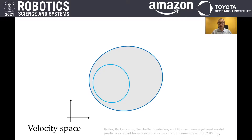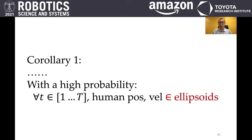Similarly, our system constructs ellipsoids to approximate the human velocities in the future. Then we arrive at corollary 1, which says that the human positions and velocities in the future are always bounded by the ellipsoids. This corollary is essential because if our system can ensure safety regarding all these ellipsoids, it automatically ensures safety with all the possible human motion in the future.